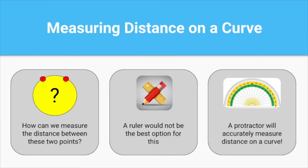In order to accurately measure distance between two points on a curve, you can use a protractor. A protractor will give you a more precise measurement than a ruler. If you don't have a protractor, you can print a template from the internet or make your own.